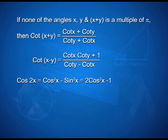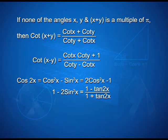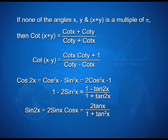cos(2x) can be expressed as cos²x − sin²x, or 2cos²x − 1, or 1 − 2sin²x, and in terms of tan x as (1 − tan²x) / (1 + tan²x). sin(2x) can be written as 2sin x·cos x, or 2tan x / (1 + tan²x). Now, students, as we have learnt about so many identities, let us use those identities to solve some interesting problems.